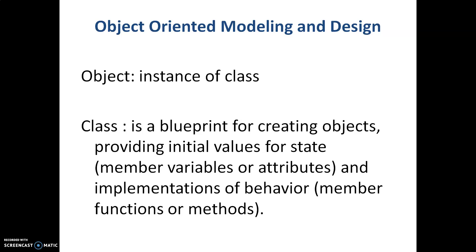For example, fruits happens to be a class and the objects are any fruit like grapes, mango, apple — all these happen to be objects. If I take a furniture class, then the desk, table, and chair all happen to be objects of the class. We know that a class is just a template whereas an object is a real-time entity.